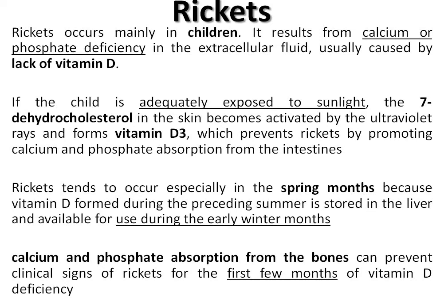By the time spring approaches, the stored vitamin D has been used up and 25-hydroxycholecalciferol is no longer available to the kidneys for activation. Calcium and phosphate absorption from the bones can prevent clinical signs of rickets for the first few months of vitamin D deficiency, as bones serve as reserves, but ultimately the signs and symptoms do appear after a few months.